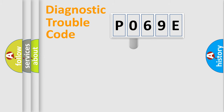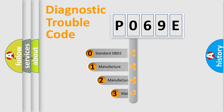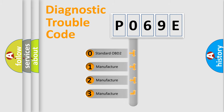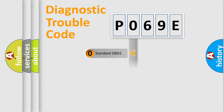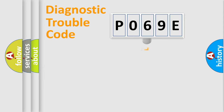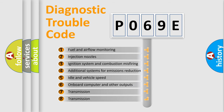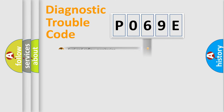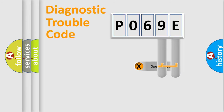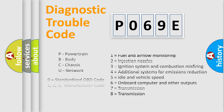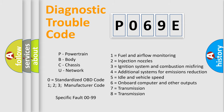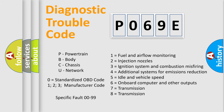This distribution is defined in the first character of the code. If the second character is expressed as zero, it is a standardized error. In the case of numbers 1, 2, or 3, it is a manufacturer-specific error. The third character specifies a subset of errors. This distribution is valid only for the standardized DTC code, and only the last two characters define the specific fault of the group.